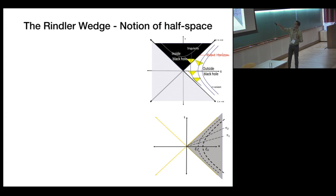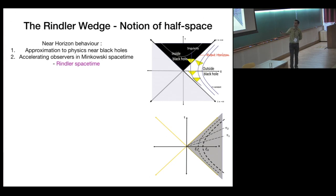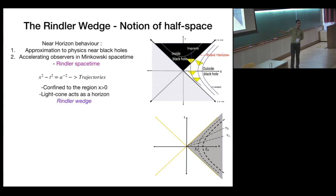Physics near black hole event horizons or space-time horizons can be approximated using something called Rindler space-time. This Rindler space-time also describes uniformly accelerating observers in Minkowski space-time. The trajectories of uniformly accelerating observers, or observers sitting outside a black hole, are hyperbolic trajectories confined to x greater than zero — a particular wedge. The light cone acts as a horizon for these observers, so this is called the Rindler wedge. You can write down a transformation from flat Minkowski space, which is a hyperbolic transformation.